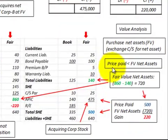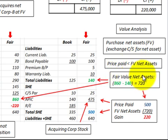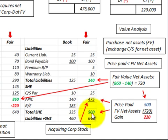Now let's look at the scenario where the price paid is less than the fair value of the net assets received. In this case, there would be no goodwill — instead we'd have a gain or loss. Our net assets are still $720,000 ($860,000 in assets less $140,000 in liabilities), but the price paid was only $500,000 worth of stock. Comparing those, we have a gain of $220,000.